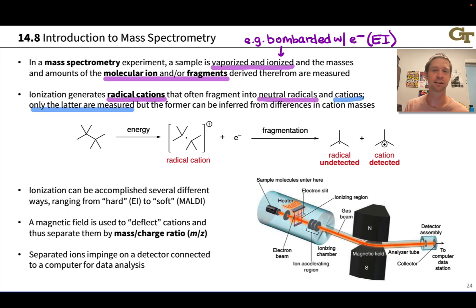The neutral radicals are not deflected by the magnetic field and just get pushed right through the instrument without being detected. But the smaller cations can be detected.